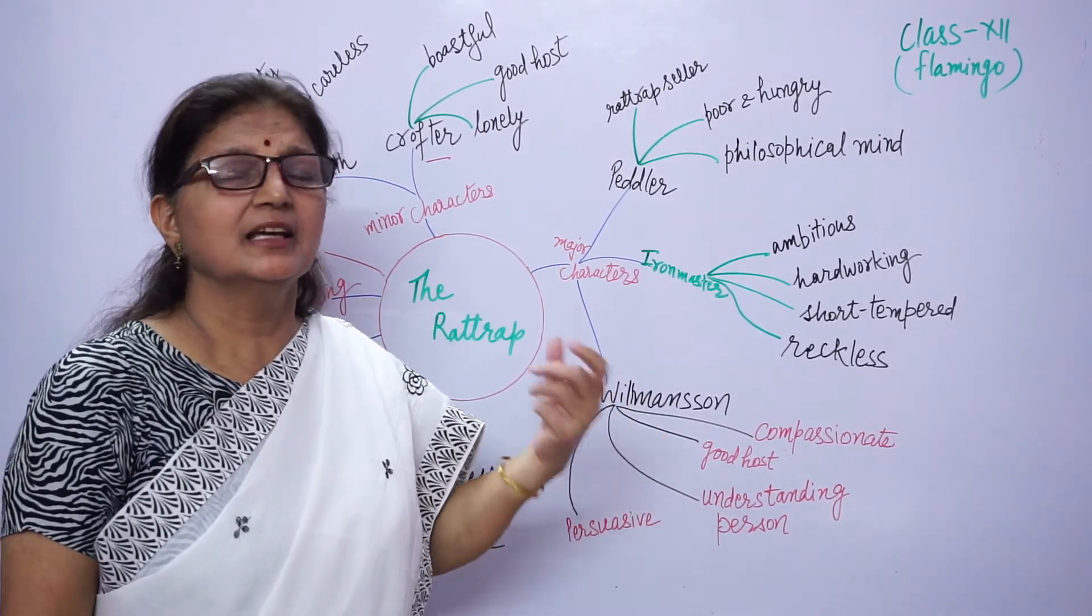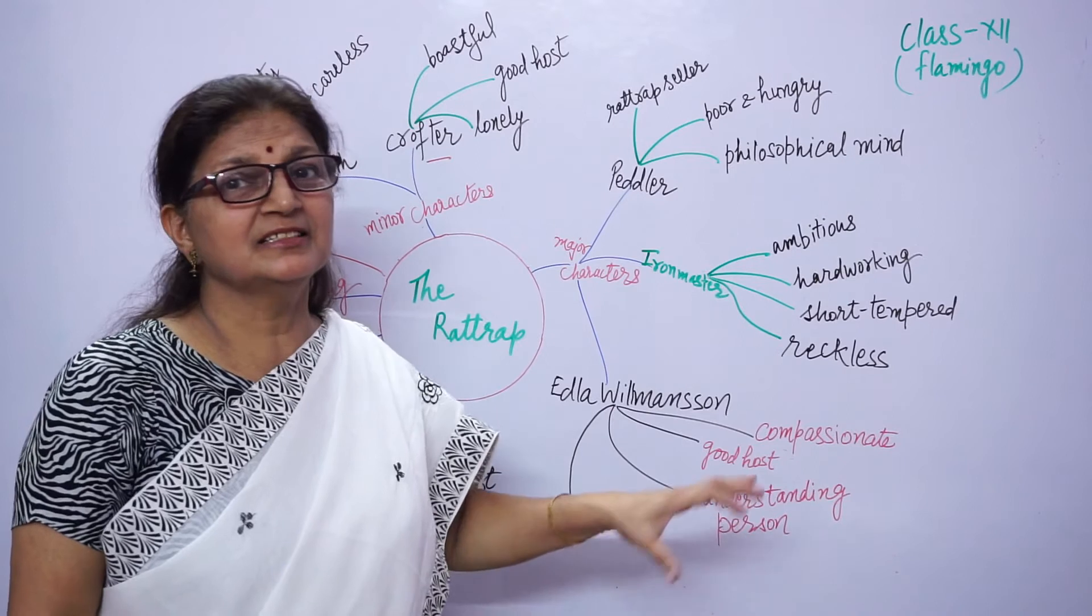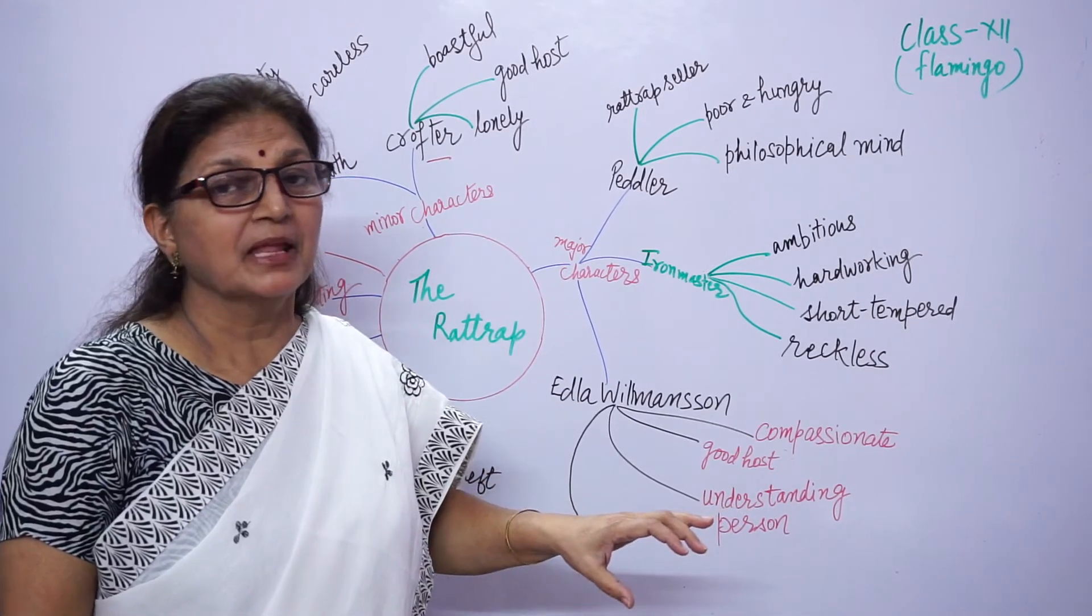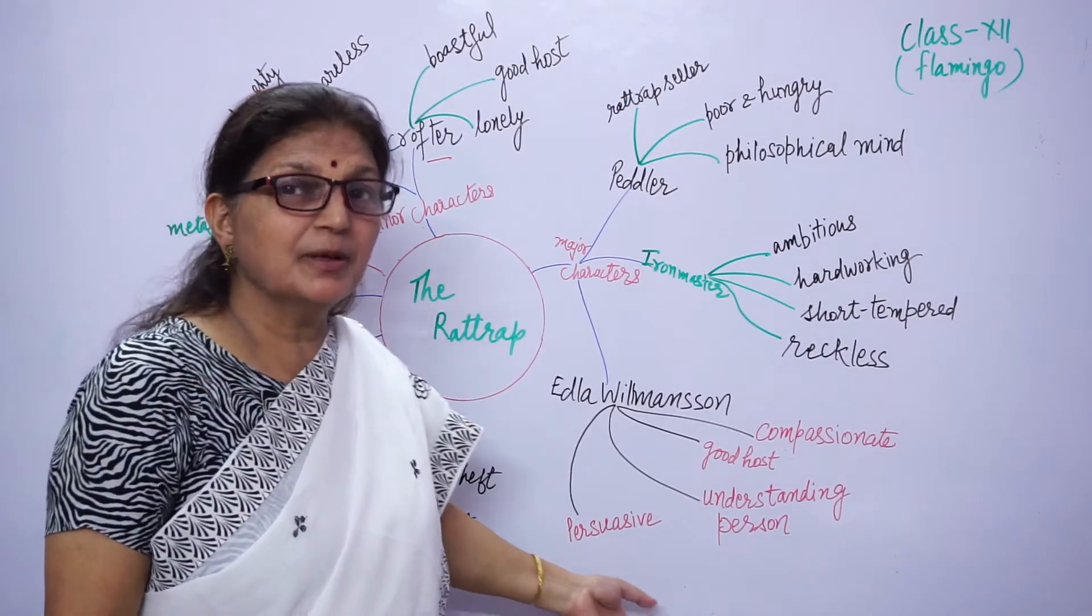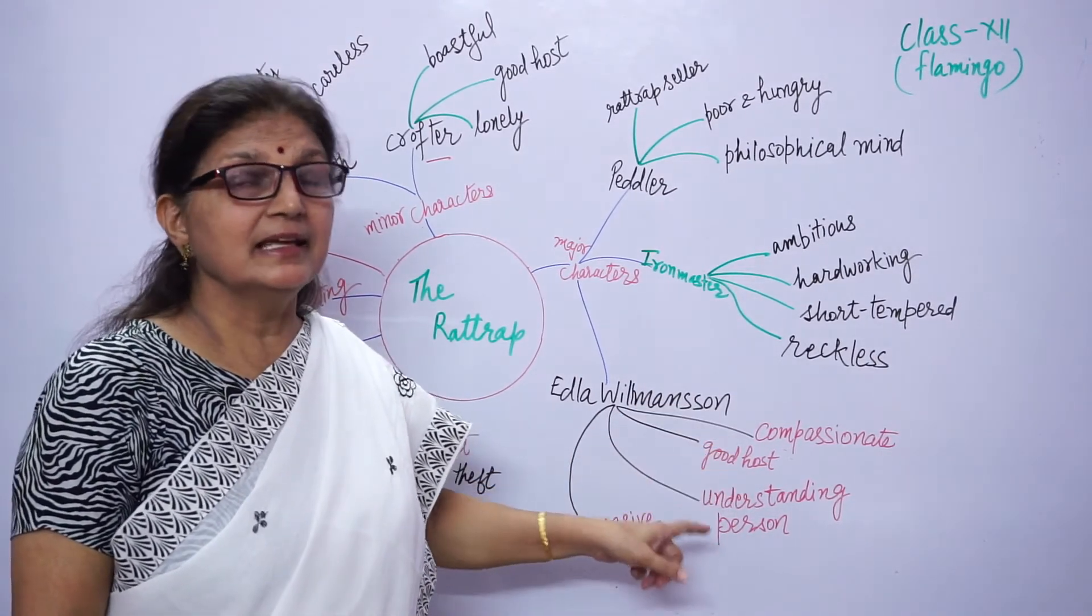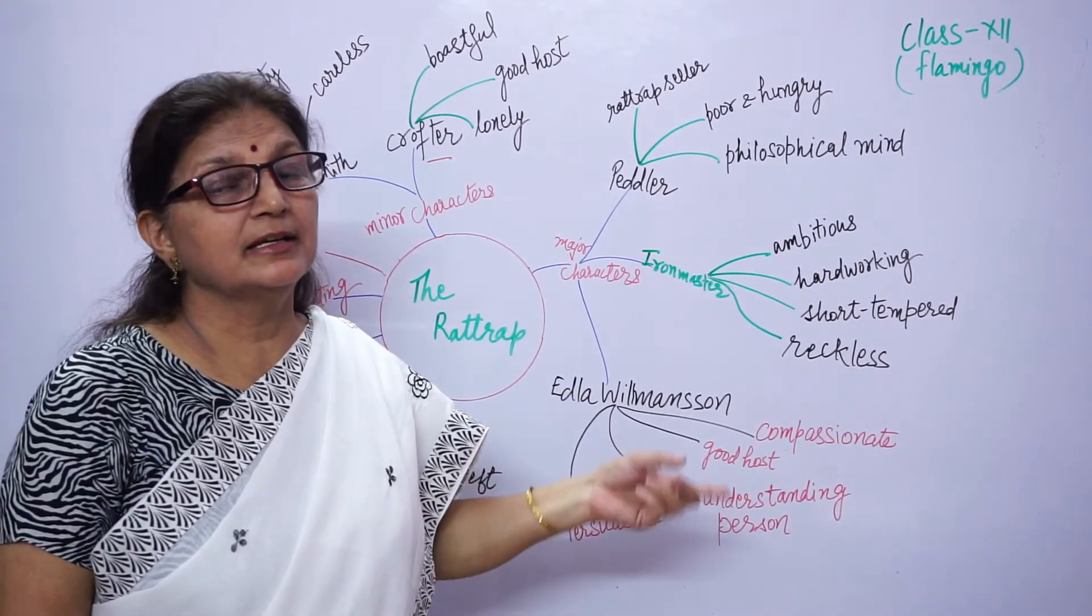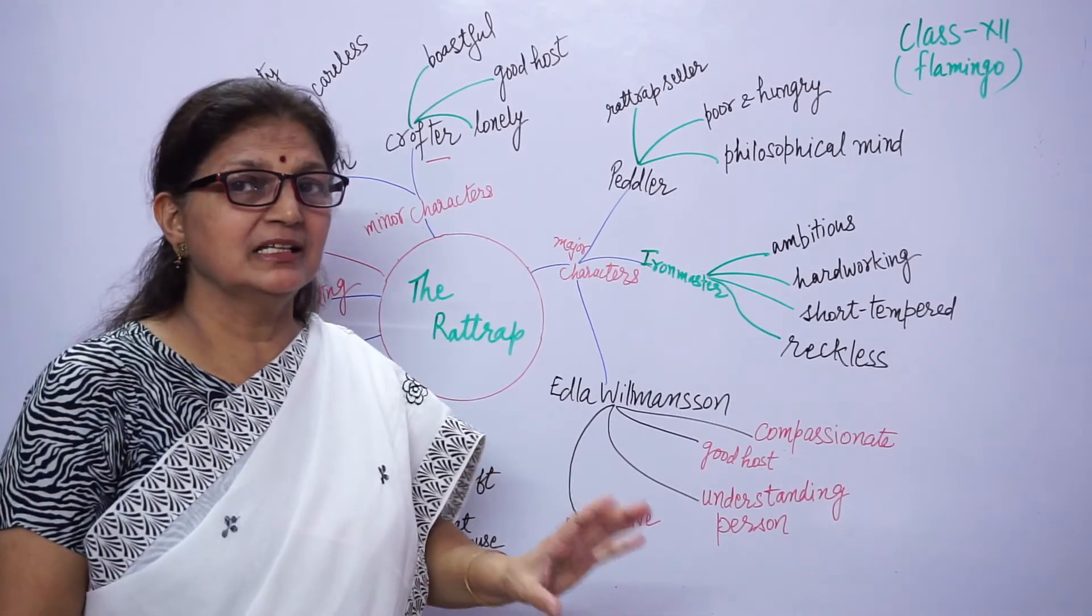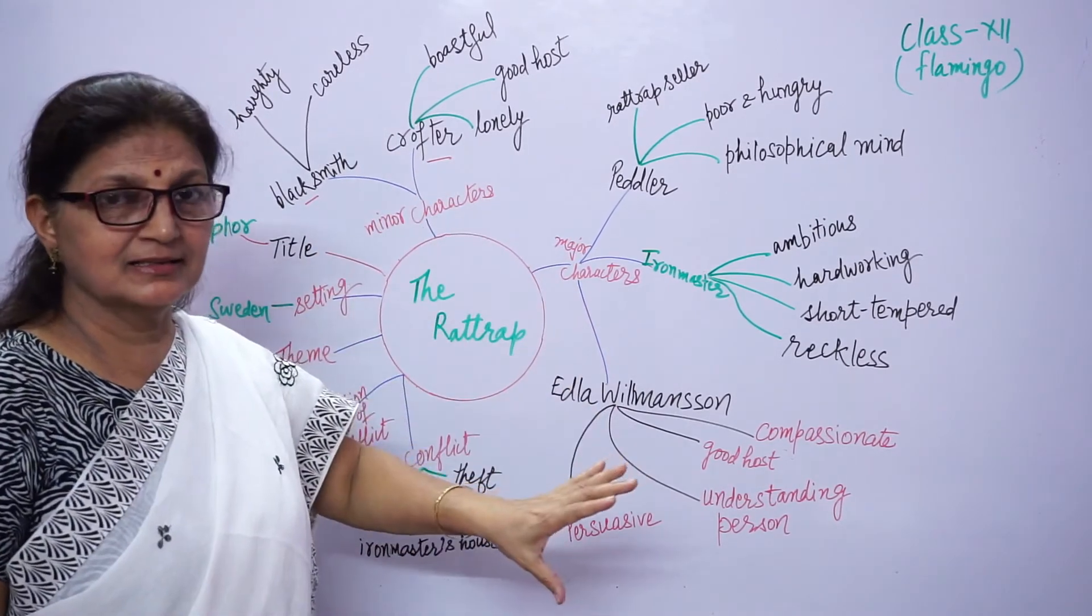When his father is ready to turn him out of the house, she requests her father that at least till Christmas he should be kept at home. She convinces her father. These are our major and minor characters in the story.